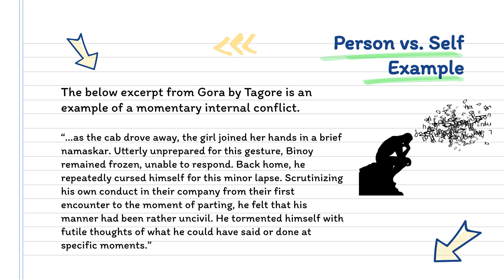Now we're going to take each one of these and look at what they would look like in the text, with a text example for each one. Below is an excerpt from Gora by Tagore, and it is an example of a momentary internal conflict: 'As the cab drove away, the girl joined her hands in a brief namaskar. Utterly unprepared for this gesture, Benoit remained frozen, unable to respond. Back home, he repeatedly cursed himself for this minor lapse. Scrutinizing his own conduct from their first encounter to the moment of parting, he felt that his manner had been rather uncivil. He tormented himself with futile thoughts of what he could have said or done at specific moments.' Here we see the character is struggling inside themselves — scrutinizing, cursing, and tormenting themselves. That's why it's person versus self.